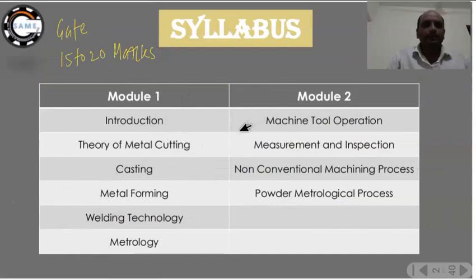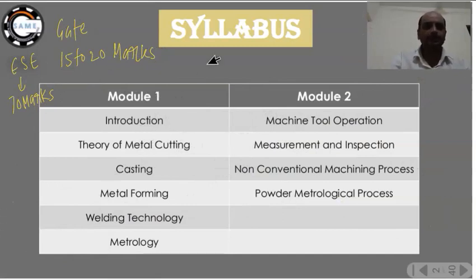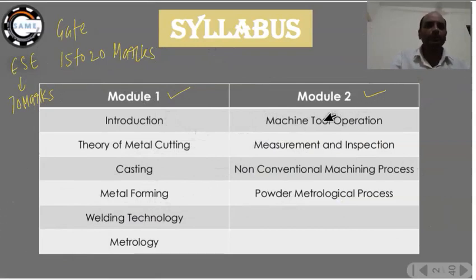In the ESE, manufacturing engineering covers up to 70 marks in the paper, so it is very important. I have divided the syllabus into two modules. Module number one is very important — almost 80 to 90 percent is covered in it. In module number two, very few questions are asked.